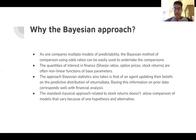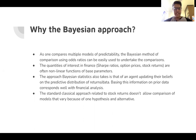The quantities of interest in finance are also non-linear functions, and so linear regressions don't really work out with Sharpe ratios, option prices, and stock returns. The Bayesian approach also captures the agent updating their beliefs after looking at data. This information on prior data and then updating beliefs really corresponds well with financial analysis, whereas the classical approach doesn't really allow comparison of these models.